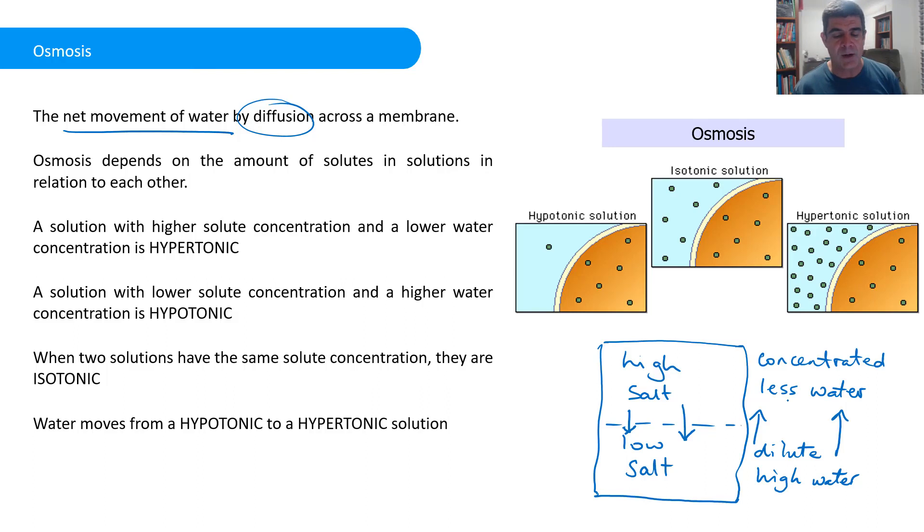The important thing about osmosis is it's very much dependent on the amount of solutes in the solutions in relation to one another, that is on either side of the membrane. And in order to look at these in a little bit more detail, we're going to describe three different types of solutions: one with a very high solute concentration we're going to call hypertonic, a solution with a lower solute concentration we'll call hypotonic, and when the solution outside the cell is the same as inside the cell in terms of the concentration of particles, we call that isotonic.